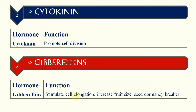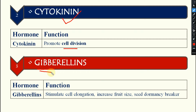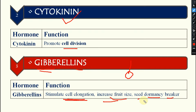Next, coming to cytokinin — it promotes cell division. After that, the third hormone is gibberellins. Its functions are: it stimulates cell elongation, increases fruit size, and acts as a seed dormancy breaker. If some seeds are dormant and not germinating, gibberellins are applied to break that dormancy.